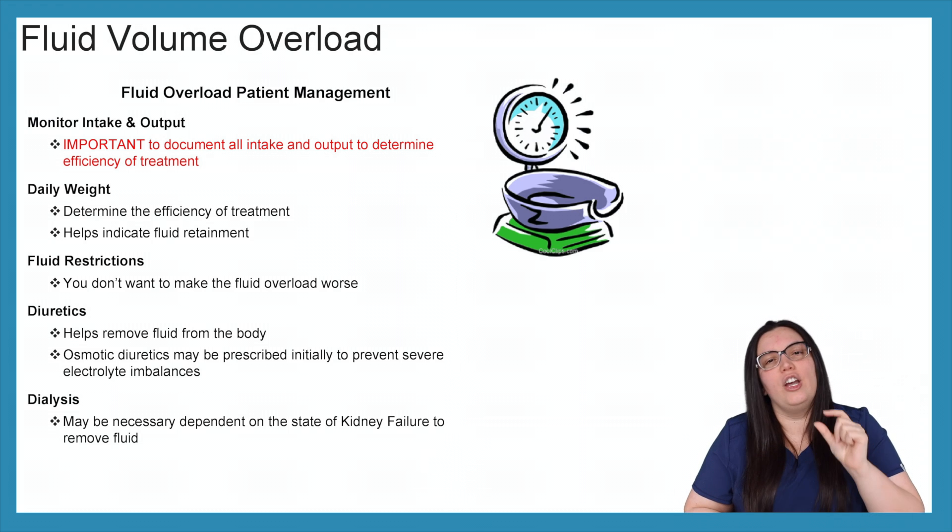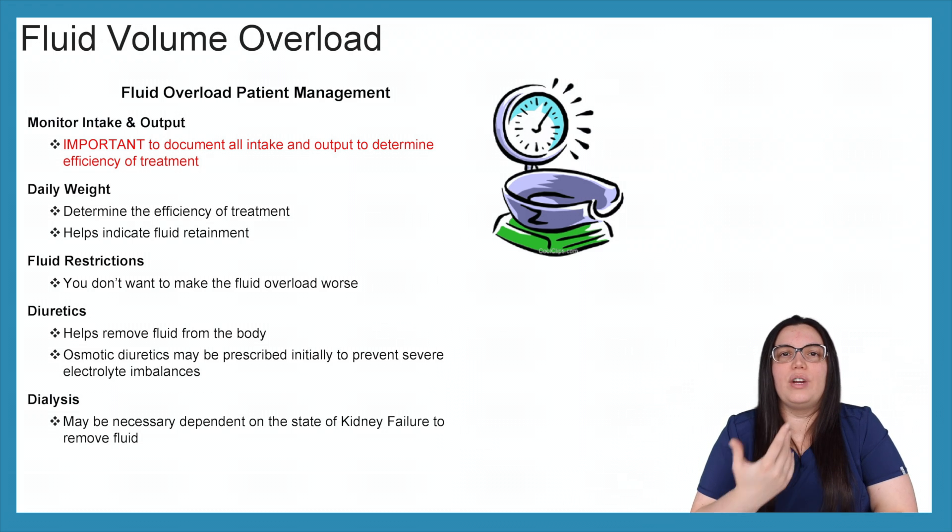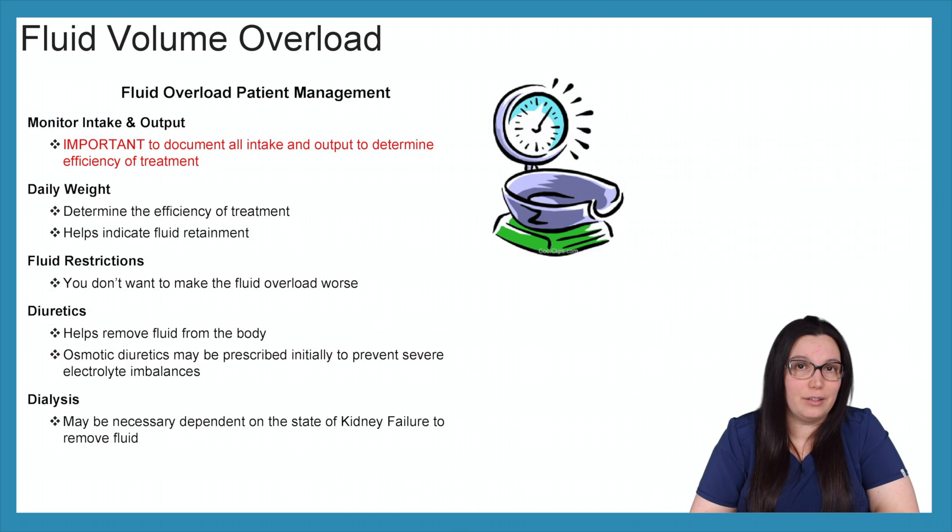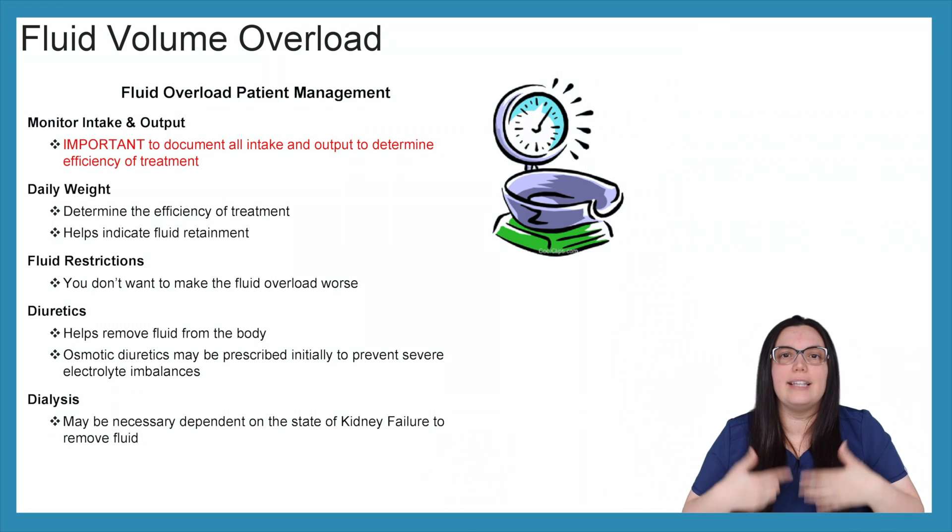So diuretics, the big things that happen with them is it helps remove fluids from the body. Osmotic diuresis may be prescribed initially to help prevent that severe electrolyte imbalance. But if we're giving things such as Lasix and we have a low potassium say of two because it's highly diluted, then we don't want to continuously keep giving Lasix because what is Lasix? It's a loop diuretic and loop diuretics cause potassium to be excreted. So we want to look at maybe using like a potassium sparing medication such as spironolactone. So those are things you have to take into consideration when you're providing care for your patient.